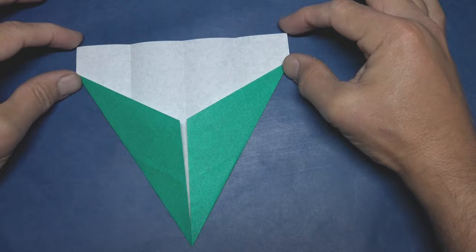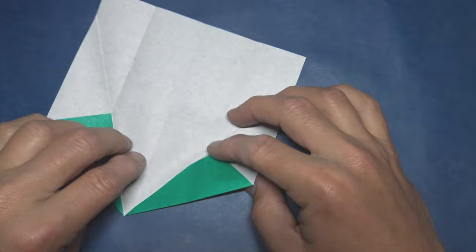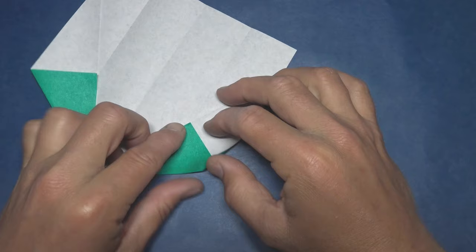Now these two lengths should be equal. If not, I recommend going back and redoing it so that your folds are more exact. Okay, unfold and fold the corner to here.